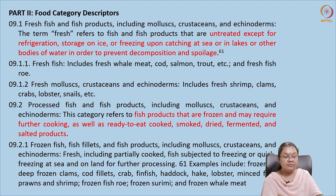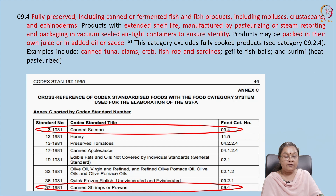Category 9.4 deals with fermented fish products and canned fish products, including mollusks, crustaceans, and echinoderms. These products have extended shelf life and may be developed by steam retorting or pasteurization. They are packed in airtight containers with vacuum sealing to ensure sterility. Fish-based snacks are put under a different category — category 15, which is ready-to-eat savories. The standards related to these products are listed in specific codex standards; for example, Codex Stan 3-1981 is the standard for canned salmon, placed under category 9.4. Similarly, the standard for canned shrimps and prawns is Codex Stan 37, also under the same category.